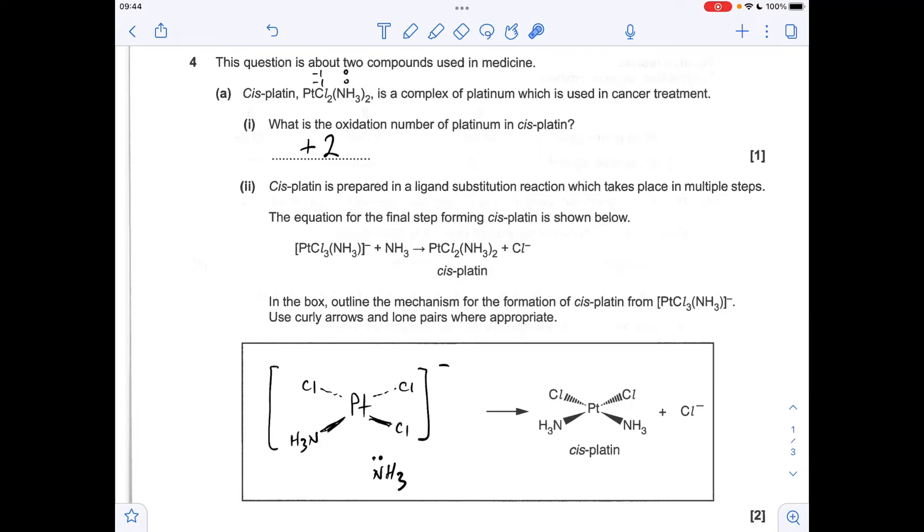Moving on to this unfamiliar mechanism, so we need these two species to interact and generate cisplatin and a chloride ion. The way that's going to work is if the lone pair on the nitrogen is attracted towards the platinum, that's going to form this bond here, we need this to break and the Cl to come off as a Cl minus ion, so that's a curly arrow from the middle of the bond onto the Cl.